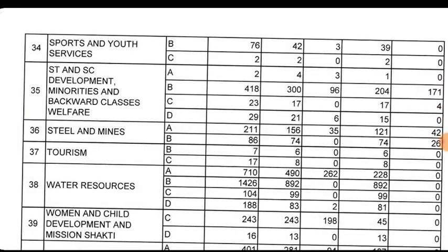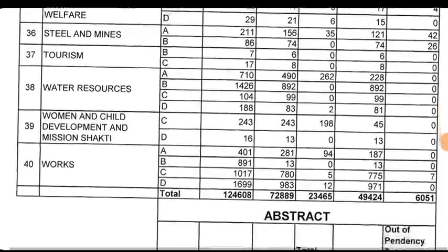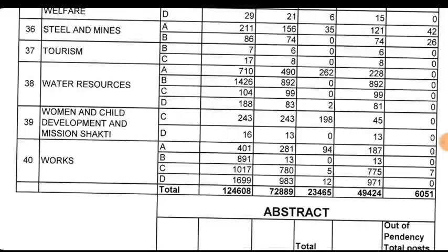The ST and SC Development Department has Group C with 807 and Group C with 808. The Works Department has a total Group 0 post listed.